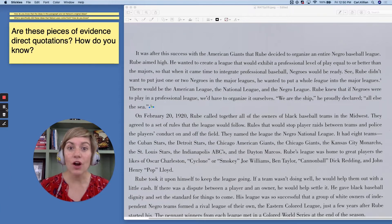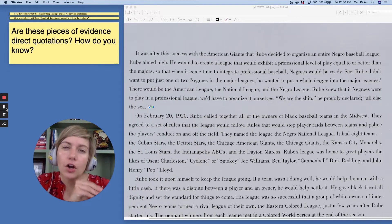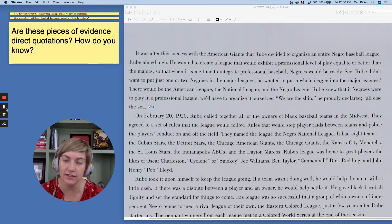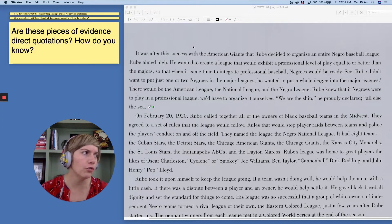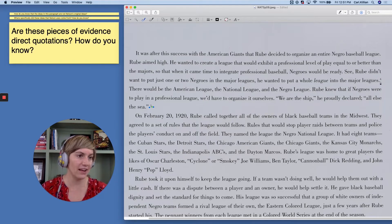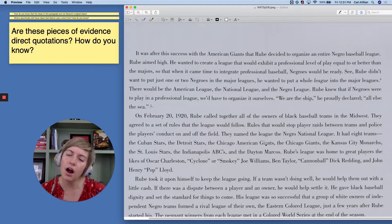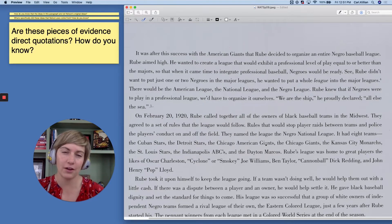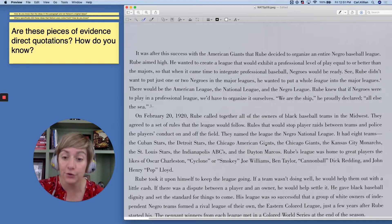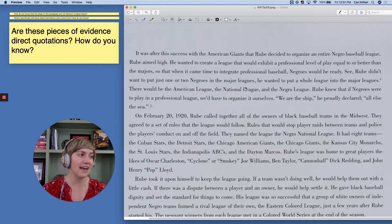Did you figure it out? Good job. Holloway, Black Ball Stars, page 21. Nice work using those endnotes to help you identify the source. Now, I want you to think about this question. Are these pieces of evidence that we just identified direct quotations? How do you know?